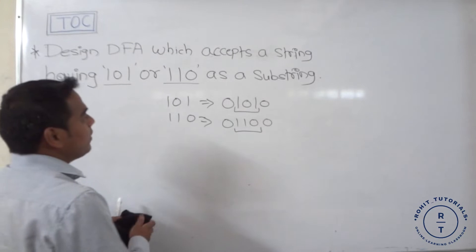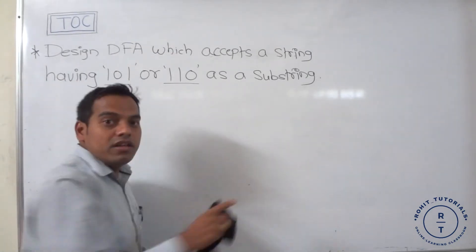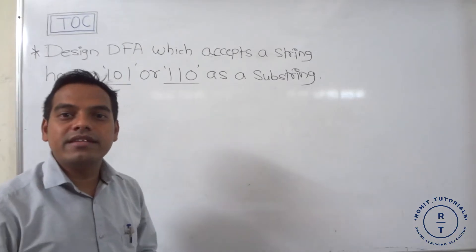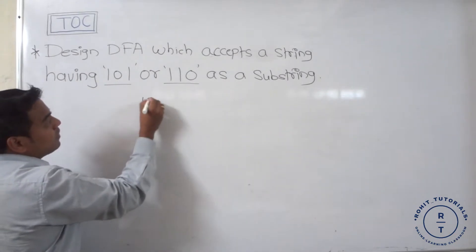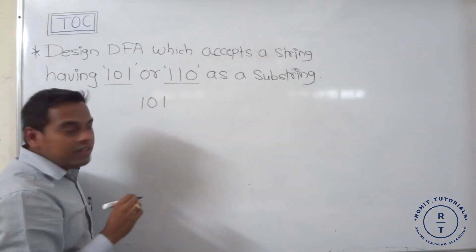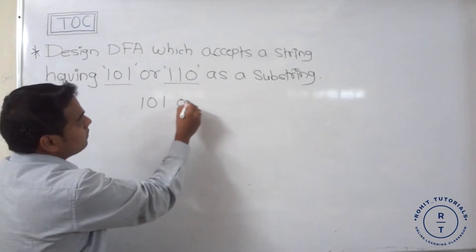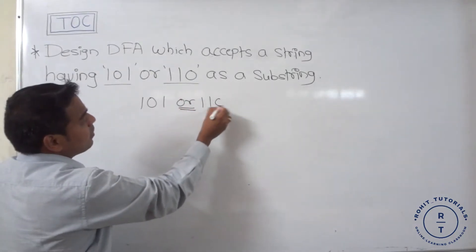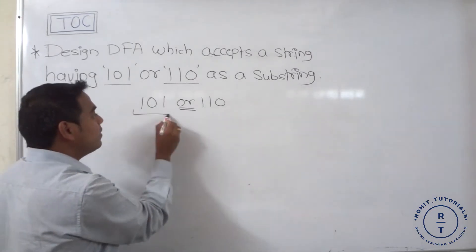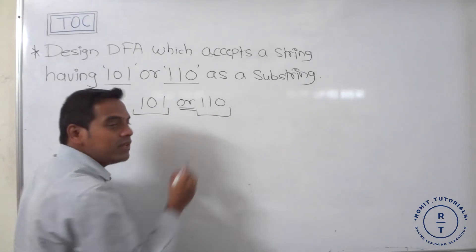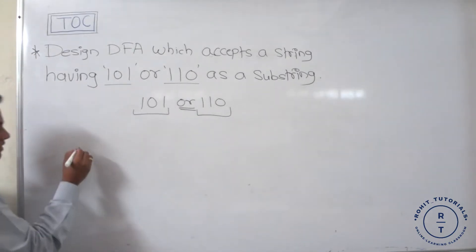We are designing a finite automata based on the given problem. First, we have to find out the minimum string present in the given problem. The minimum strings are 101 and 110 — both are accepted by the finite automata. So we will start with the design.